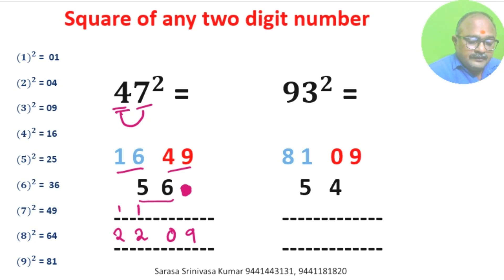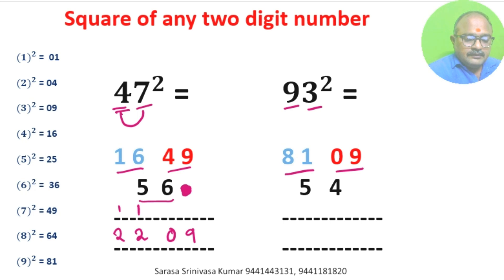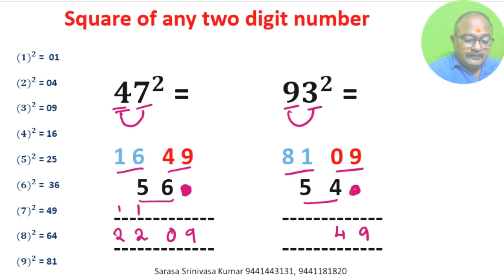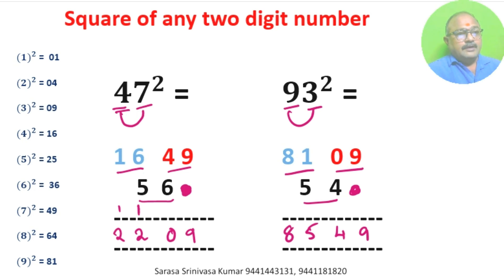93 square: square of 9 is 81, square of 3 is 09. 9 times 3 is 27, 27 into 2 is 54. We don't write anything in units place. 9, 0 plus 4 is 4, 1 plus 5 is 6, 8. Square of 93 is 8649.